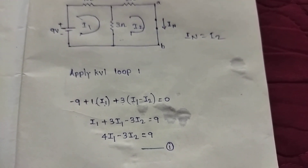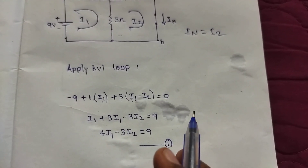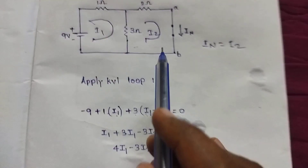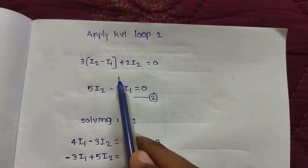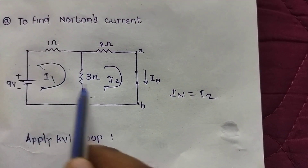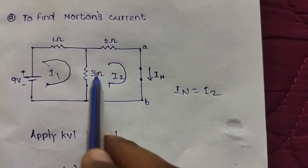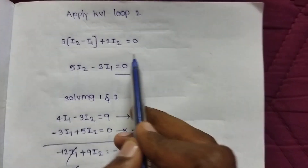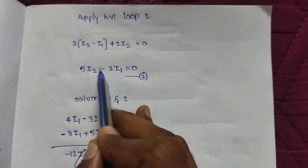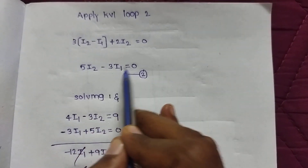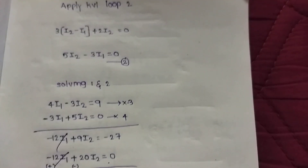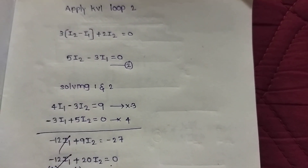Now applying KVL to the second loop: the three ohms have two currents involved — I2 and I1 in the shared branch. So: 3(I2 minus I1) plus 2·I2 equals 0. Simplifying: 3I2 plus 2I2 gives 5I2 minus 3I1 equals 0. This is the second equation. With these two equations from loop 1 and loop 2, we proceed.